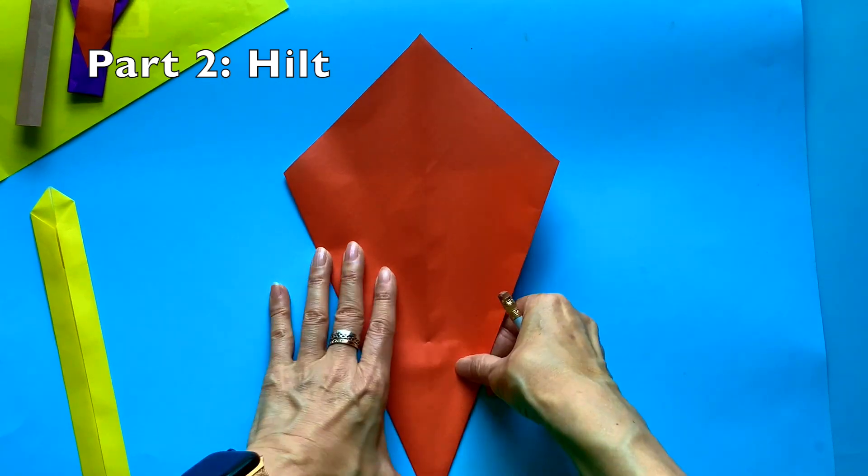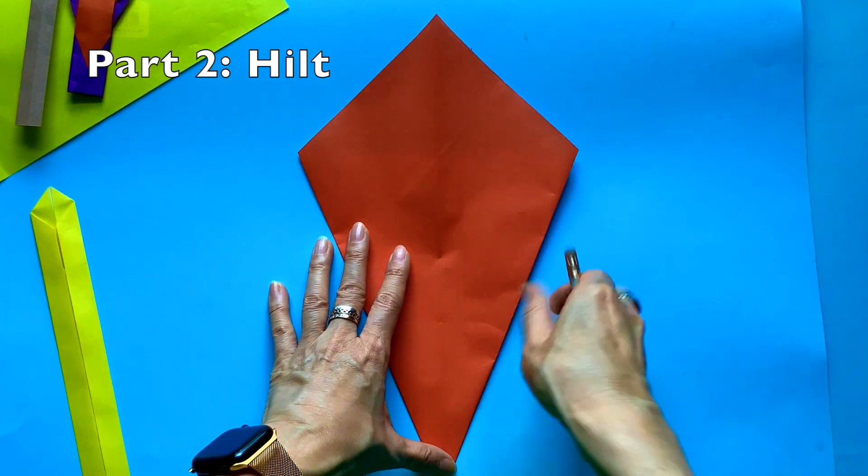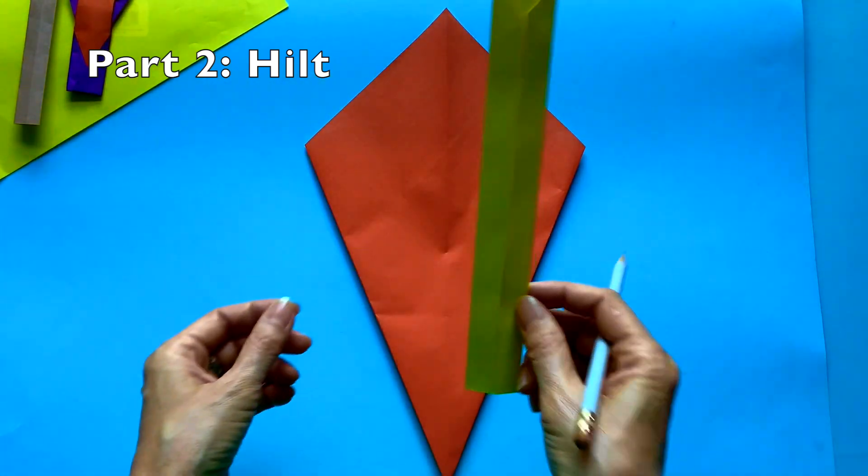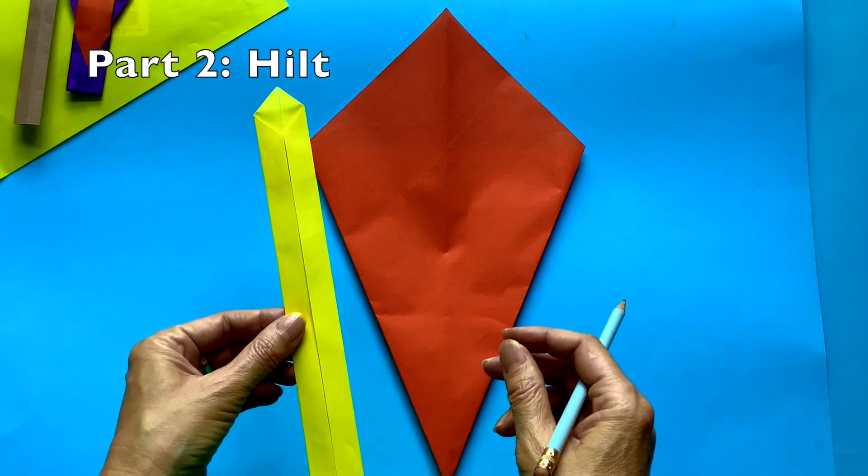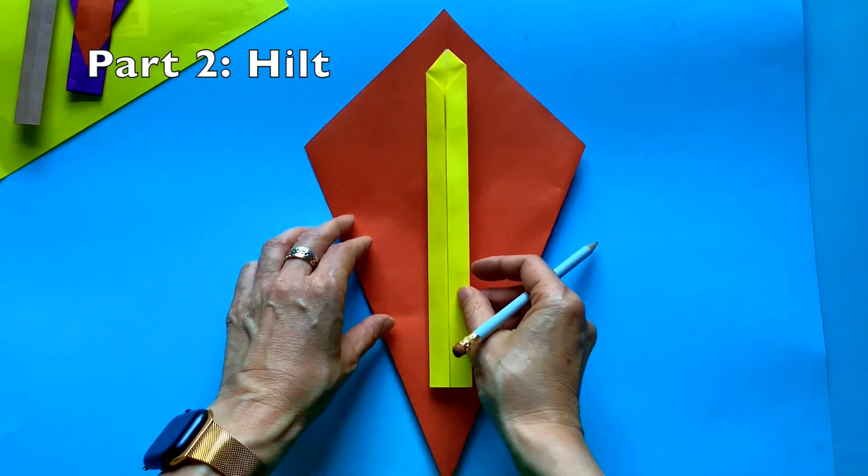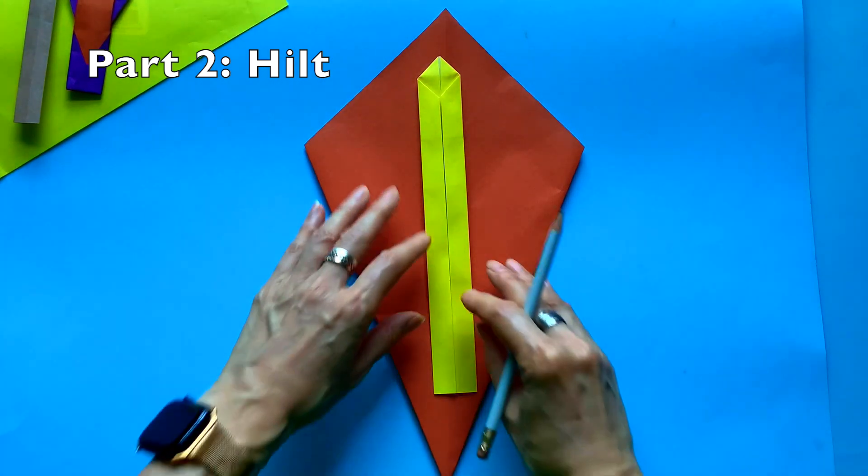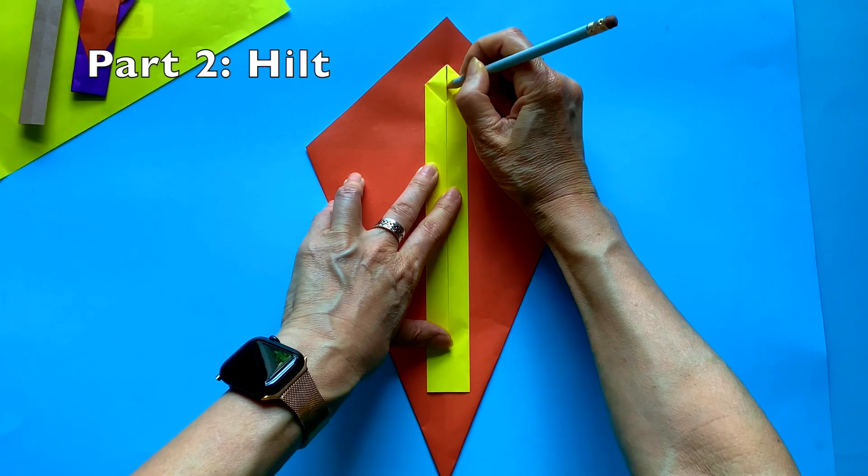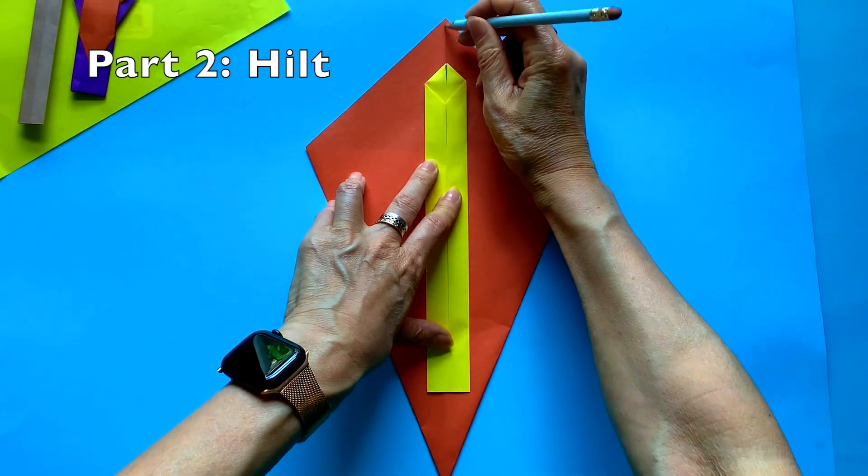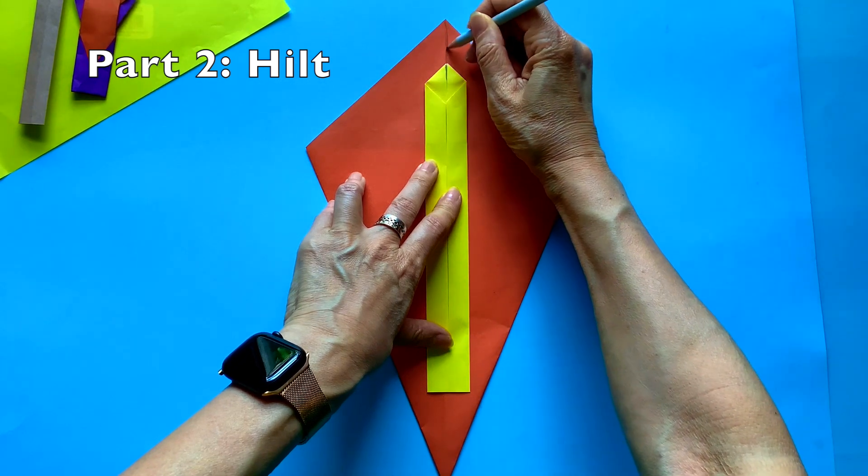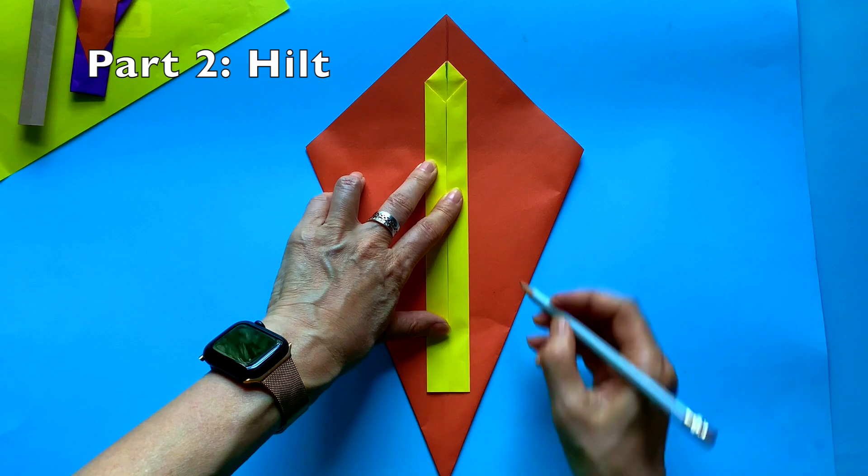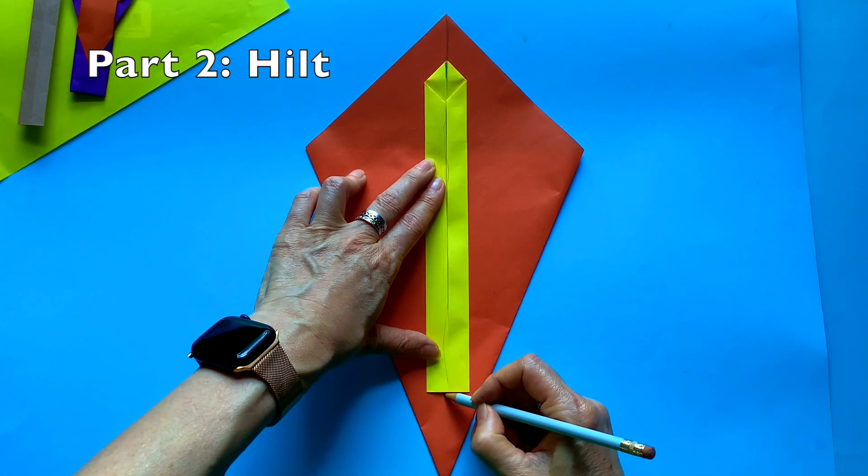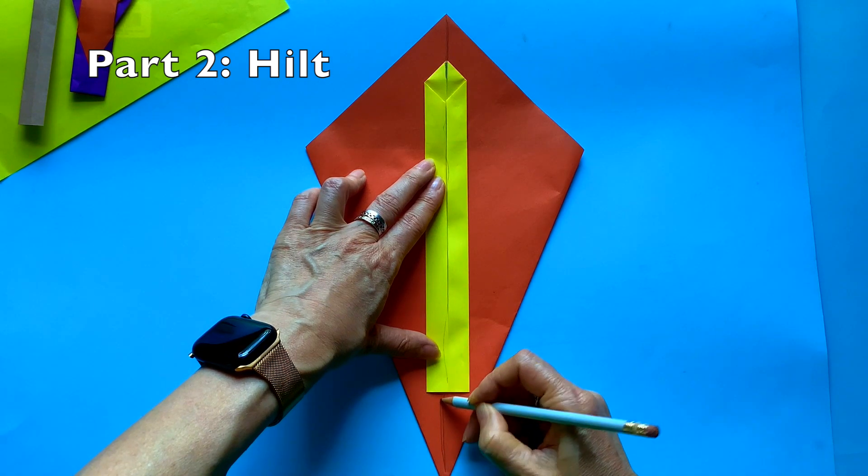For the next, turn the model over to the back side. And use your pencil and also the sword blade part. Next step, use both of them. Put the sword you made in the center and mark the center vertical line of both of the kite and the blade. The center vertical line goes from top to the bottom, just like this.